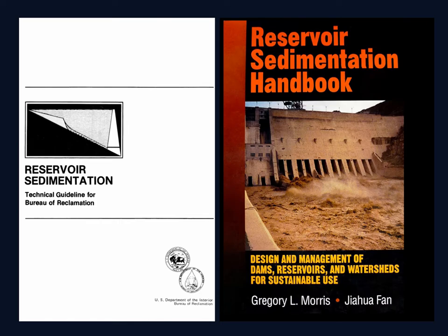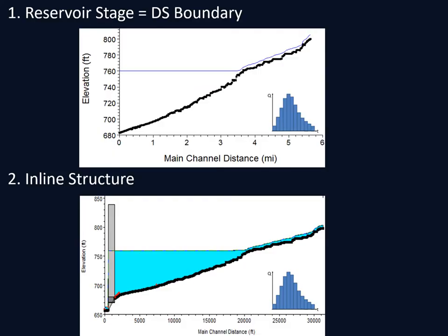If you're interested in sediment processes or sediment management, there are two great references available online. We're going to model reservoir sedimentation in HEC-RAS. This video will talk about two ways to model reservoir sedimentation in quasi-unsteady flow. You can model sediment in HEC-RAS in either quasi-unsteady or unsteady flow. Unsteady flow is more precise but also harder. Quasi-unsteady flow is a lot more stable and you can usually run longer run times. For most sediment transport applications, quasi-unsteady is the way to go.